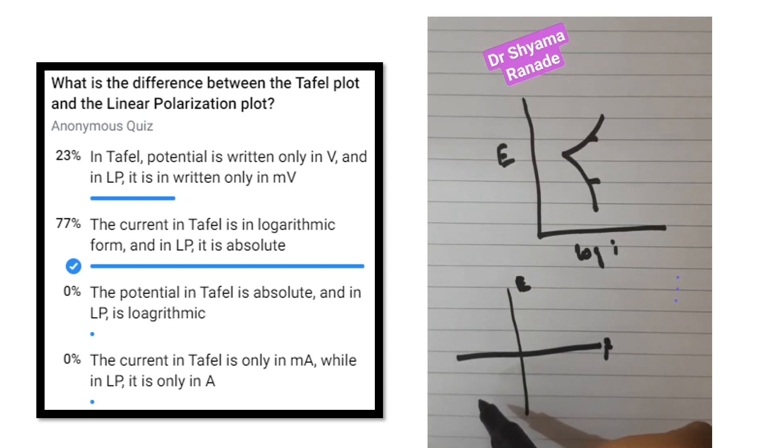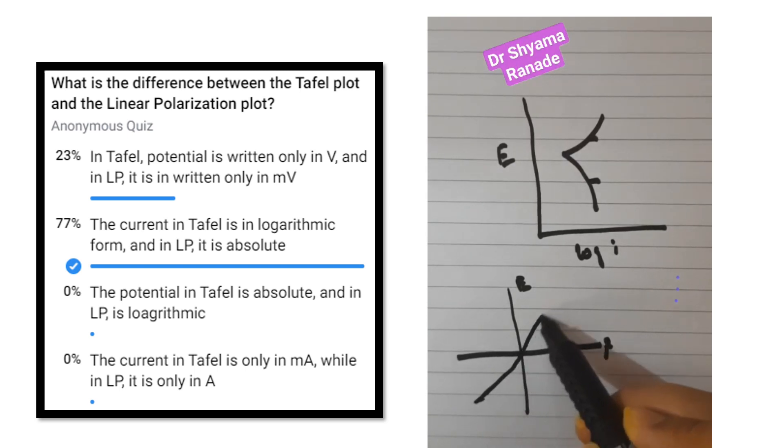Hence the curve that we get is mostly linear to a certain extent. So the next question is: